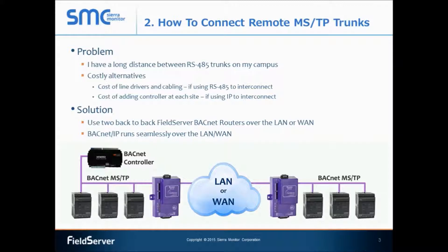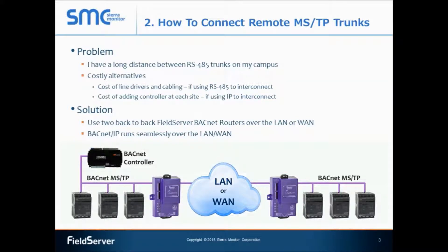By installing and configuring a BACnet router from BACnet MSTP to BACnet IP, and a second router back-to-back from BACnet IP to BACnet MSTP, I can get the BACnet MSTP network up and running very quickly, keeping my installation and commissioning costs as low as possible. The IP protocol runs over the LAN or WAN depending on the physical locations of the buildings.